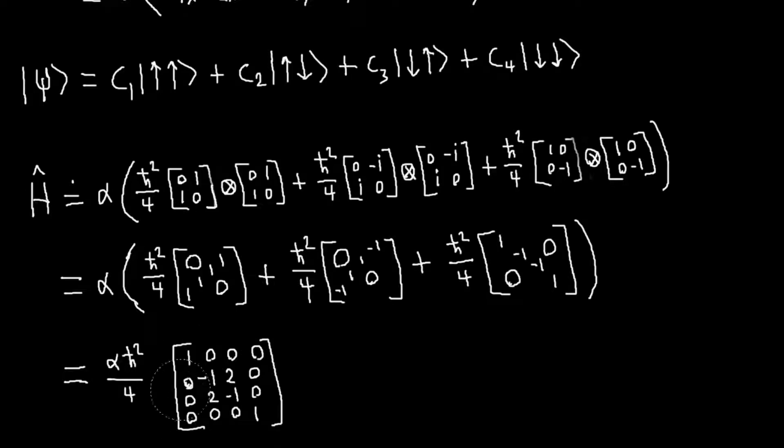And that would be annoying, and our matrix wouldn't be block diagonal. But here we already know that this is an eigenvector, and this is an eigenvector, and then the other two eigenvectors will just be some linear combinations of these two vectors.